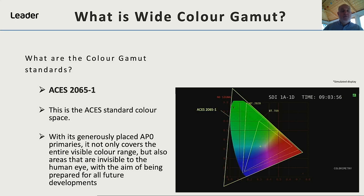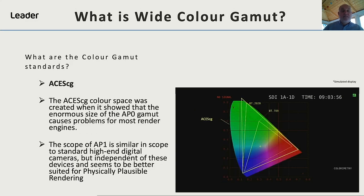The first of the ACES standards is 2065-1, and with its generously placed AP0 primaries, it not only covers the entire visible colour range, but also areas that are not visible to the human eye, with the aim of being prepared for future developments. However, this is somewhat unwieldy and can cause problems with render engines, so they've also developed an ACES CG colour space that uses the AP1 primaries, provides a wider colour space than REC 2020, and is much more practical for use when rendering.